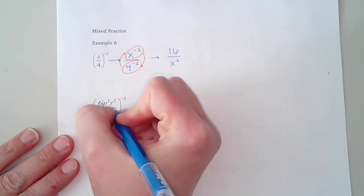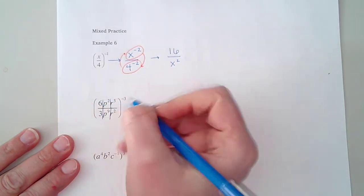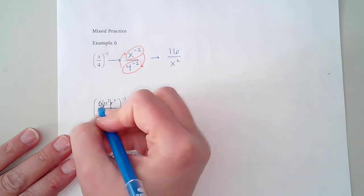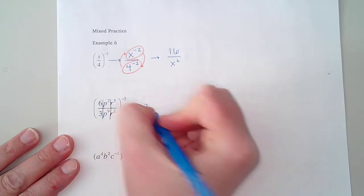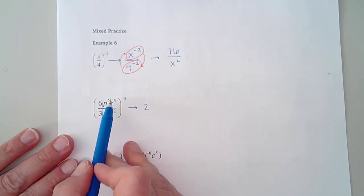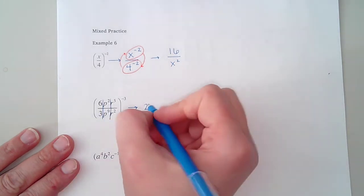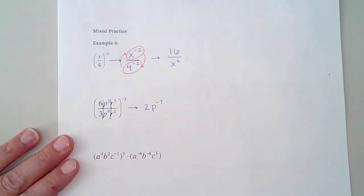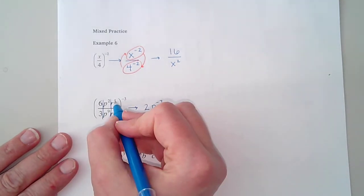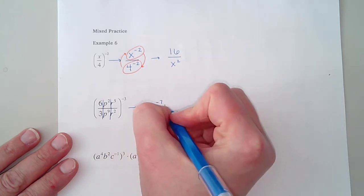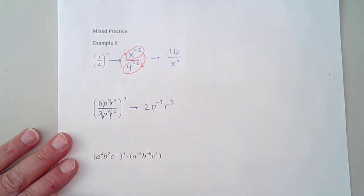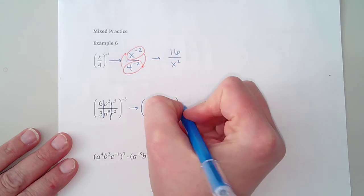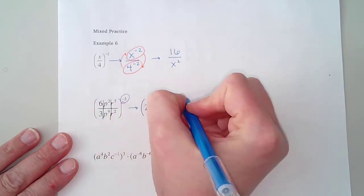This is going to divide up like this. 6 divided by 3 gives me 2. Here I'm subtracting 2 minus 9 would give me negative 7, and I'm just going to write it as negative 7 for right now. We'll deal with the negative thing in just a minute. For the r's, 5 minus 2 is 3, so this will be r to the third power. And this whole thing is still being raised to this power of negative 3.